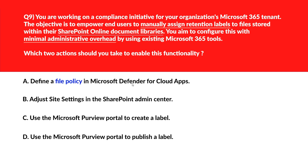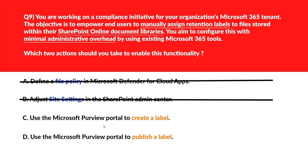This is a multiple-choice question. Option A: Define a file policy in Microsoft Defender for Cloud Apps — file policies monitor and control file activity but do not enable retention label assignment in SharePoint — incorrect. Option B: Adjust site settings in the SharePoint admin center — site settings manage site-level configuration but do not control label creation or publishing — wrong. Option C: Use the Microsoft Purview portal to create a label — this defines the rules for how content is retained or deleted — keep this. Option D: Use the Microsoft Purview portal to publish a label — publishing makes the label available to users in SharePoint so they can apply it to documents — correct. Options C and D are the right choices.